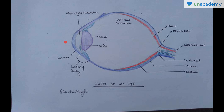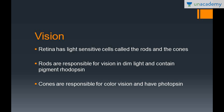We have the transparent cornea over here. So all of this is part of the eye — just a recap from the previous lesson. The retina contains the light-sensitive cells, which are the rods and cones. Rods are responsible for vision in dim light and contain the pigment rhodopsin, and cones are responsible for color and have photopsin.